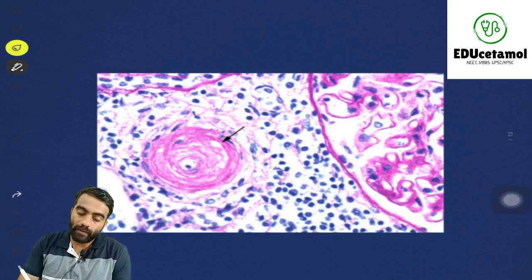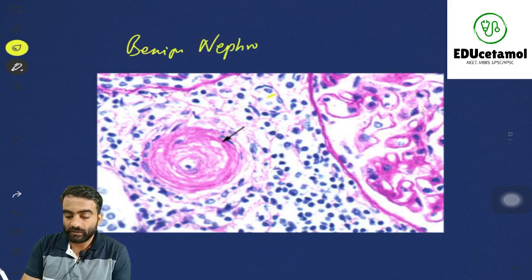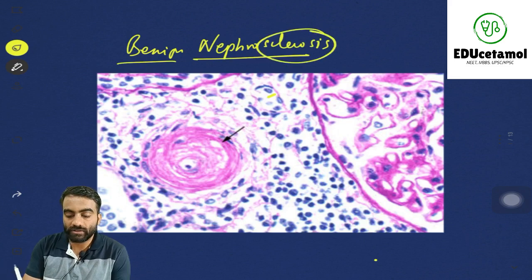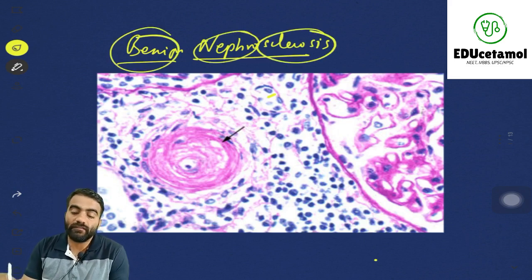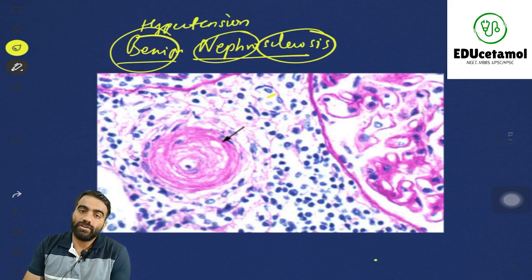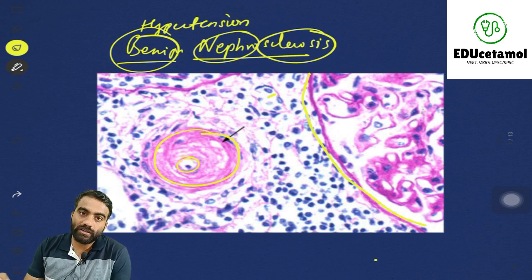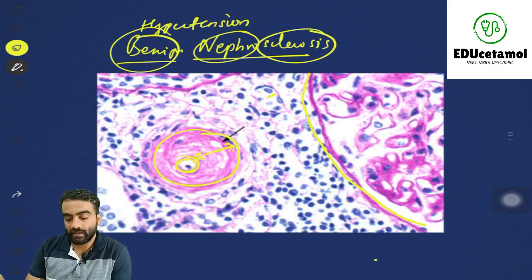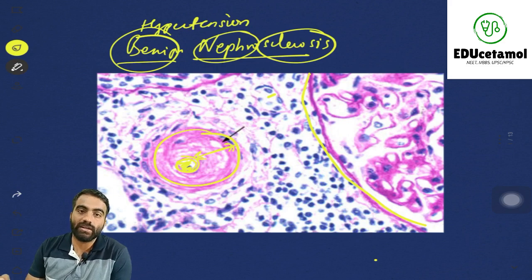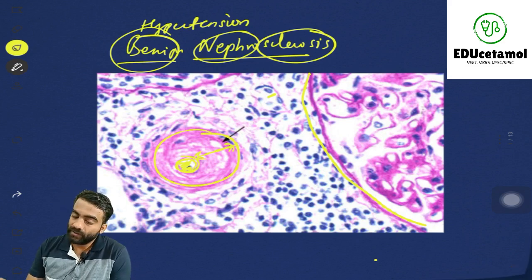In this class we are going to discuss benign nephrosclerosis. As the name suggests, there is sclerosis in the kidney which occurs in the benign phase of hypertension. In hypertensive individuals, even though it may be under control, over a long term it is going to cause some damage to the kidneys. This is the glomerulus and this is a renal arteriole — the arteriole has become sclerosed, meaning the lumen has become narrow but the thickness has increased. Because of that, there is reduced lumen and less blood flow, causing renal ischemia, and over a long term it causes a small contracted kidney.